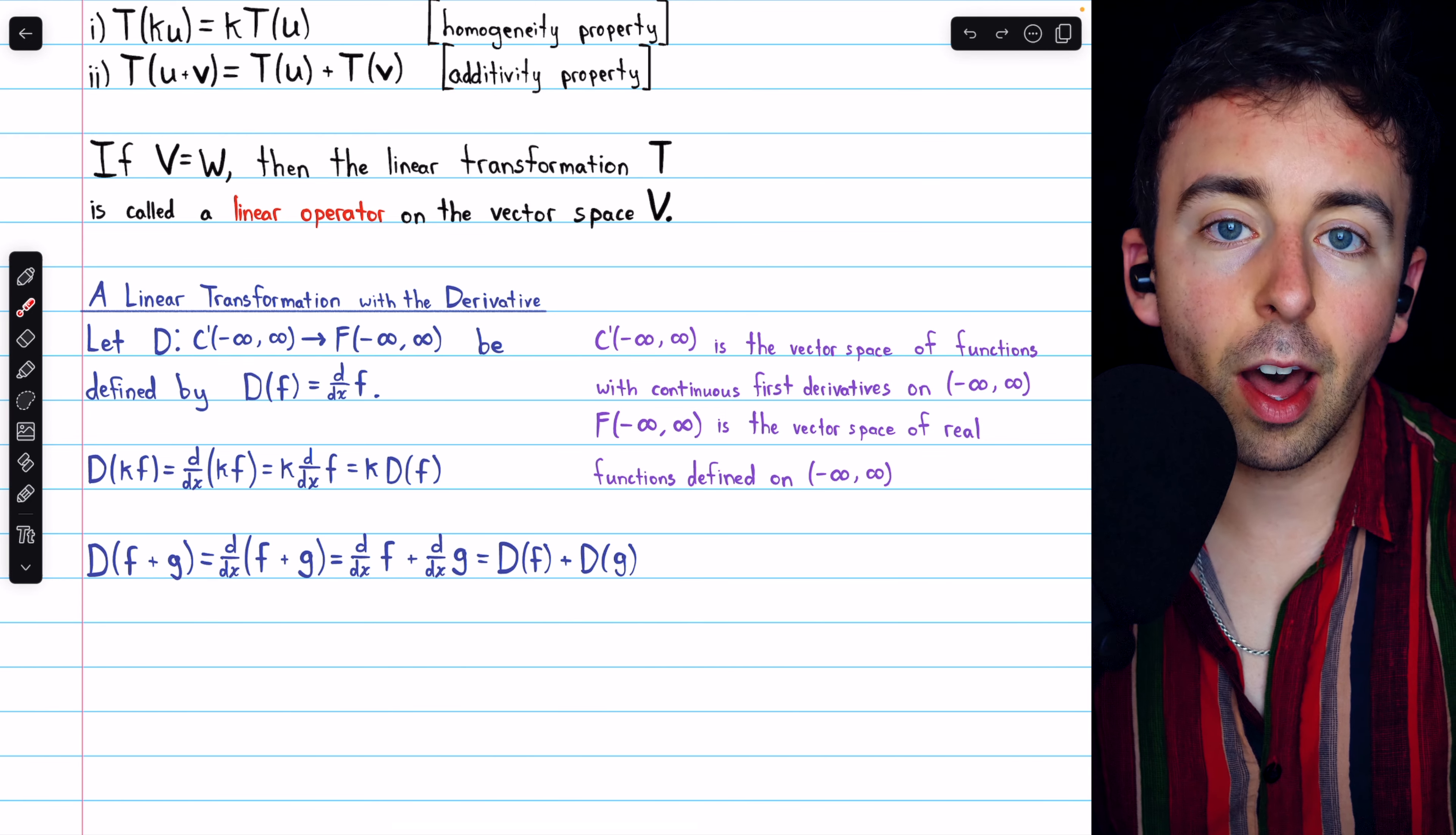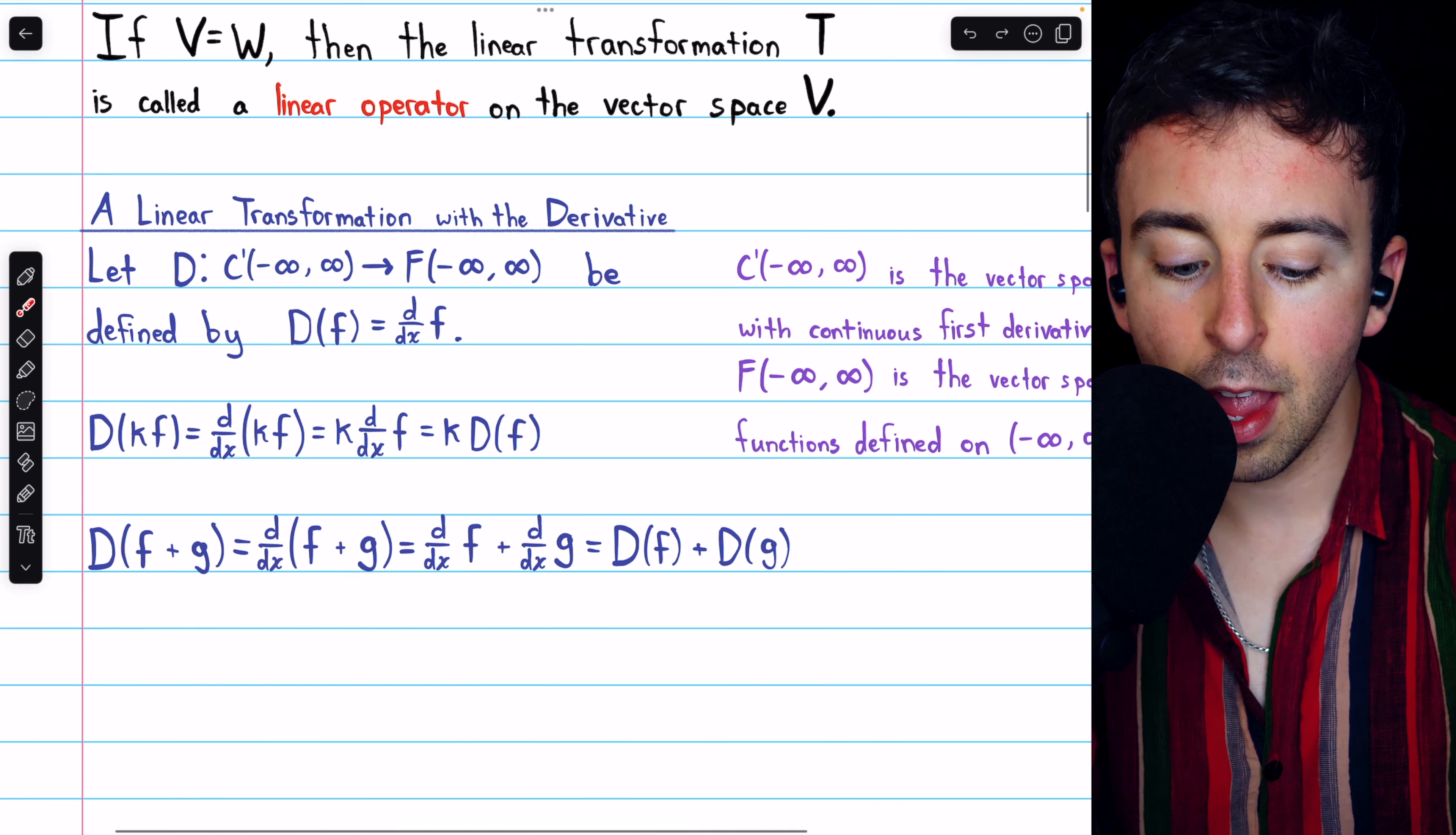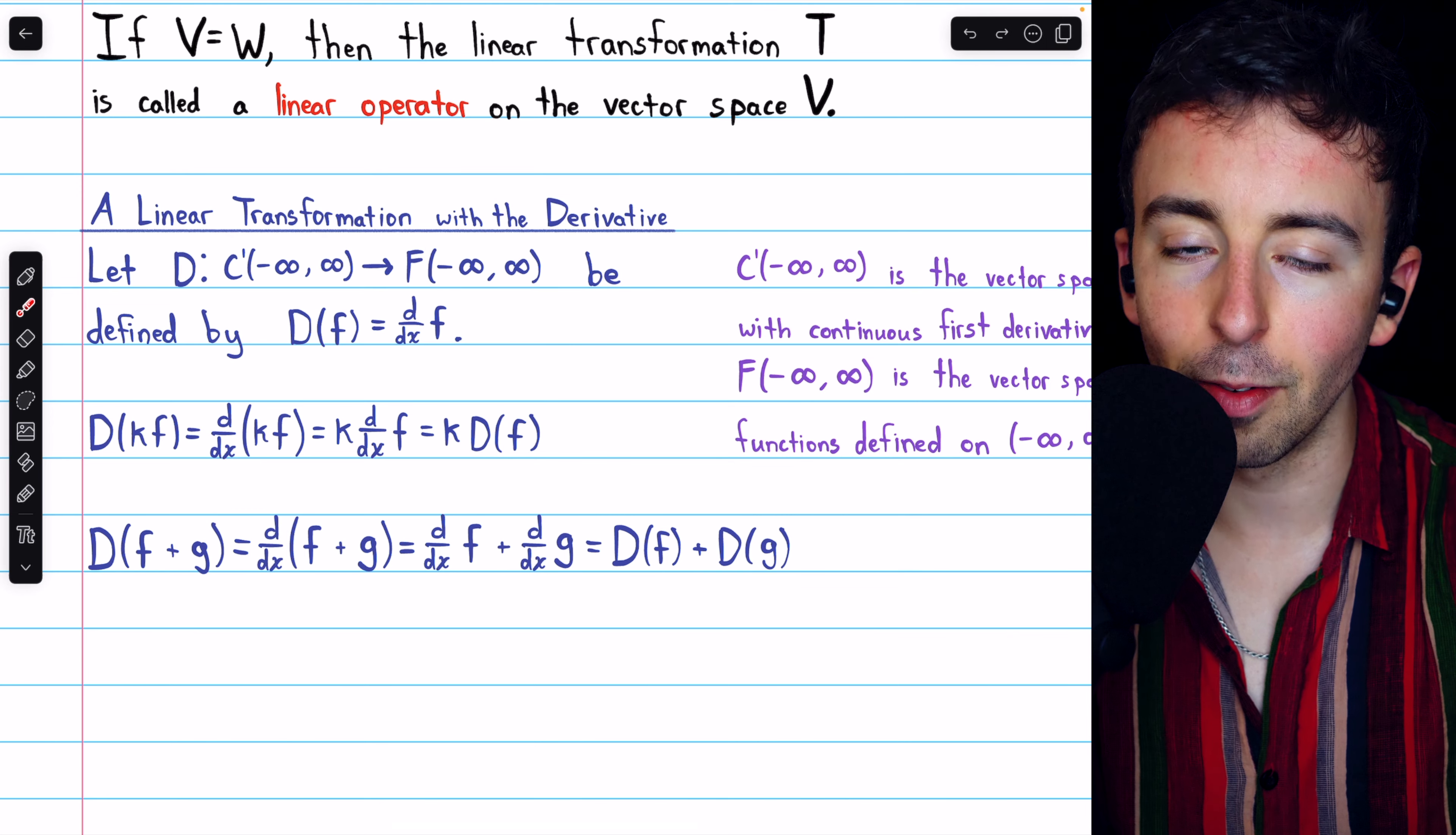Now, why is the derivative operator a linear transformation? Well, let's verify the properties. The homogeneity property is straightforward to verify from our knowledge of derivatives. The derivative of a scalar k times a function f is just that scalar k times the derivative of the function, which of course is k times D of f.